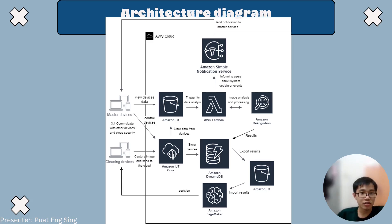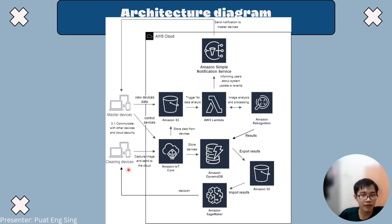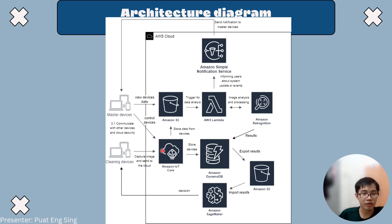My name is Puan Leng Singh. This is our architecture diagram for the proposed smart home cleaning system. We have two devices: the master device and the cleaning device. The master device is the user's device that can connect to and control the cloud system. The cleaning device and the master device are linked by IoT Core, and IoT Core will link them to the cloud system.